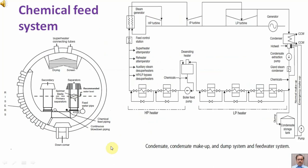This is the boiler drum internal system diagram, in which we are showing the chemical feed point or piping for dosing the chemicals. In this diagram, we are showing the chemical dosing point just before the feed pump, or at the suction of the boiler feed pump. Here we are also showing the chemical feed point at the condensate header.